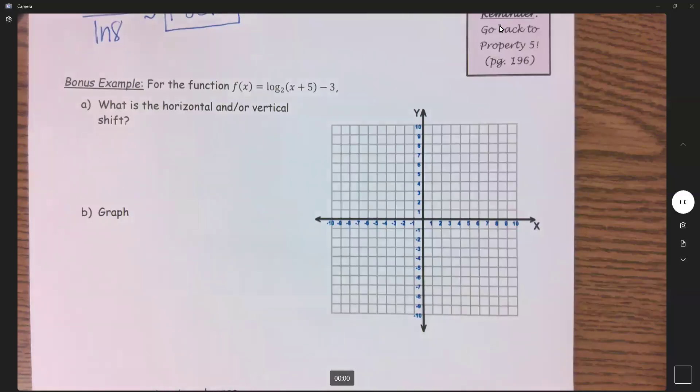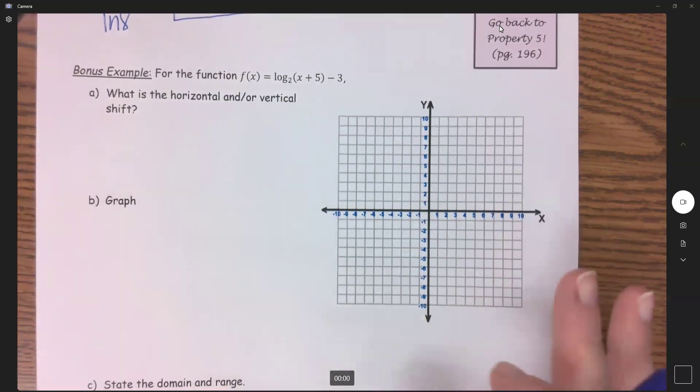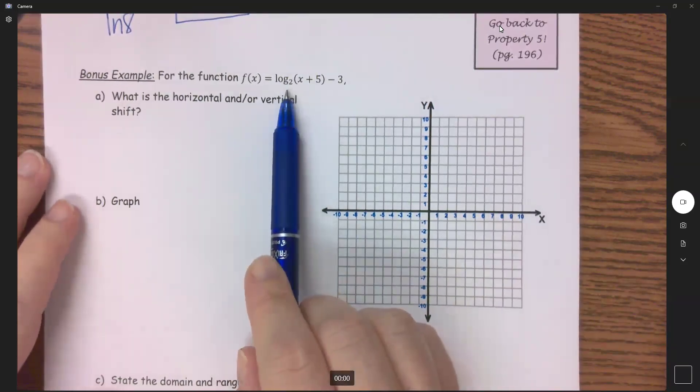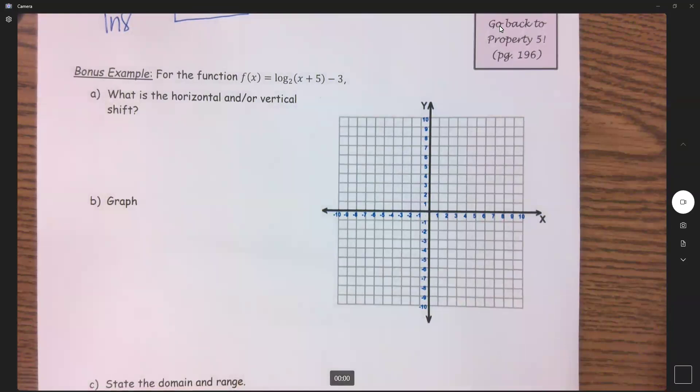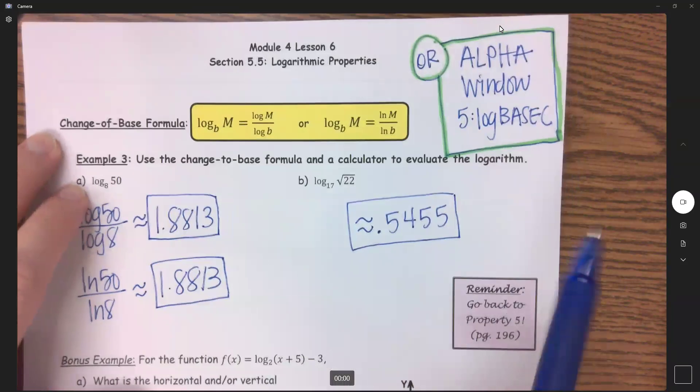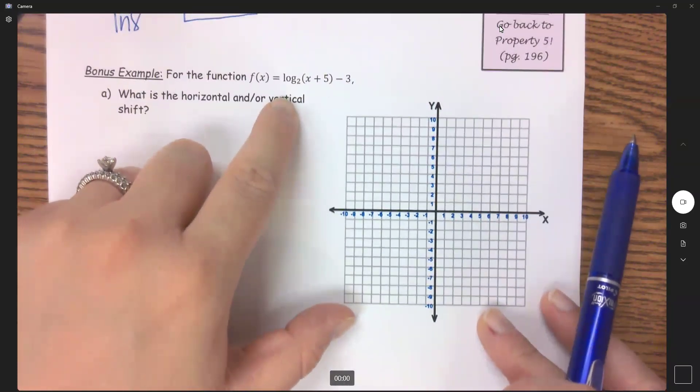We're going to end this lesson with a bonus example. For my students taking my class on campus, you're going to have to be able to graph a log by hand. And up until this point, the only logs we've been able to graph are natural logs and common logs, because that's the only log we knew how to put in our calculator. But now that we have that change of base formula, or more specifically that alpha window number five, we can put any log into our calculator now.